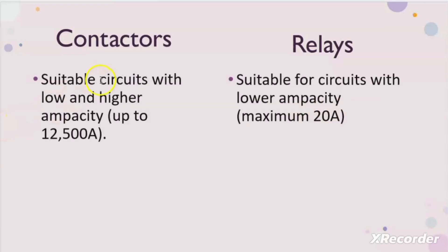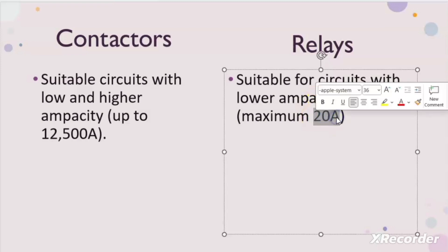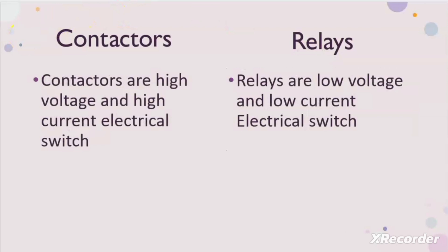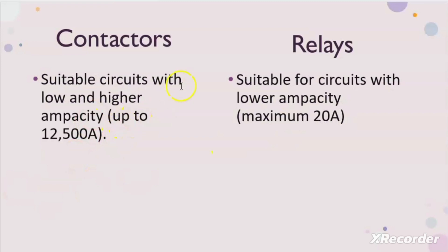The other difference between contactors and relay is that the contactor is suitable up to 12,500 amperes load application, but relay can be used for loads having a current rating of maximum 20 amperes. The contactor is for high voltage and high current applications, but relay is used for low voltage and low current applications. So the contactor can be used for circuits where the current is up to 12,500 amperes, but relay is used for circuits with current rating maximum up to 20 amperes.